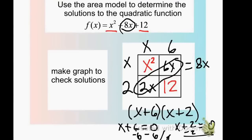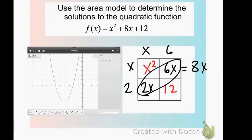You can use the algebra to graph. On the next slide is the same problem with the graph added. Notice that the solutions on the graph are negative 6 and negative 2, which matches what we found.